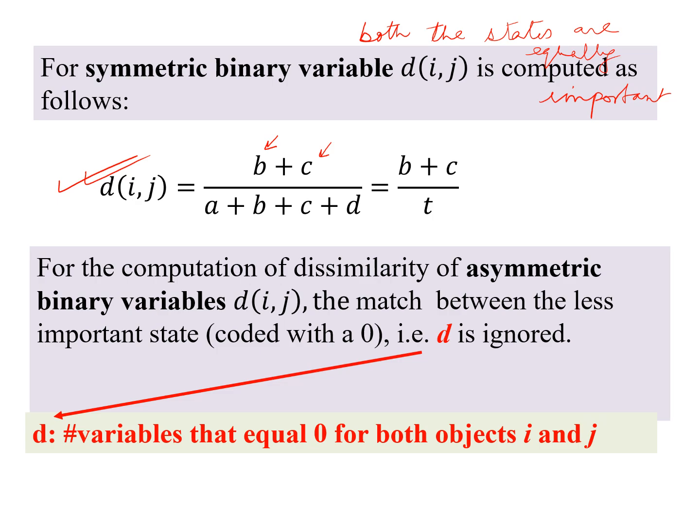Now what about asymmetric binary variable? Here we have seen that the state which is coded as 0 is considered as of less importance for the current application.